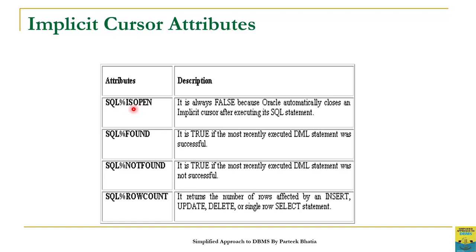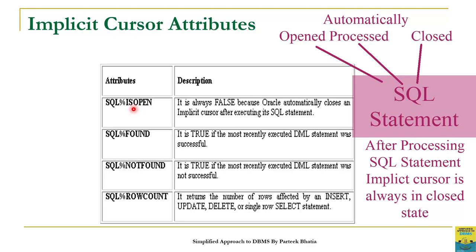It is important to note that when we execute a SQL statement, the implicit cursor is opened internally and automatically by the Oracle server. It is then processed and also closed automatically when execution of the SQL statement is completed. So when we check its value after execution, it will always return false, because this cursor is open only during the execution of the SQL statement. When execution is completed, the cursor is closed, so SQL%IsOpen always returns false.